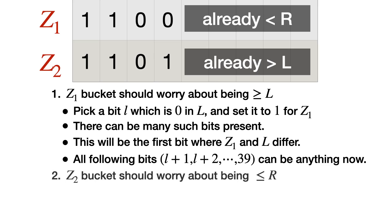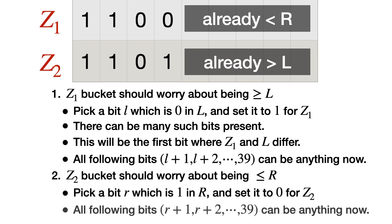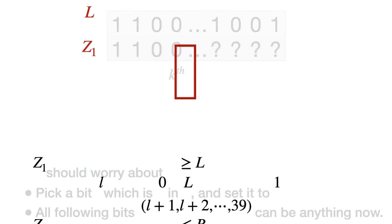Similarly, you will do for Z2. Z2 is already greater than L. To ensure that it's less than R, you have to iterate on some positions where it's a one in R and you set it to zero for Z2. Then again, the remaining bits can be anything now because we have ensured that Z is in the range of L to R.